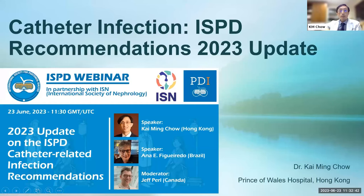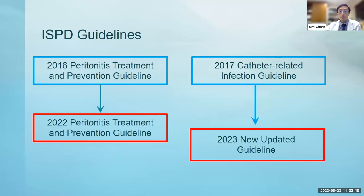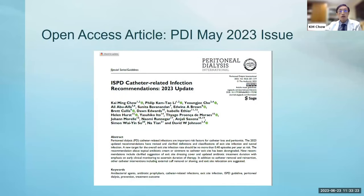Thank you, Jeff. I must take this opportunity to thank ISN for organizing this webinar to disseminate the knowledge from the ISPD 2023 update on catheter infection. In 2016, we had the peritonitis treatment and prevention guideline, which was updated one year ago. In 2017, we had the catheter-related infection guideline, which was newly updated in 2023. Today we are focusing on the 2023 updated guidelines on catheter infection, which is an open access article so all of us can access it.